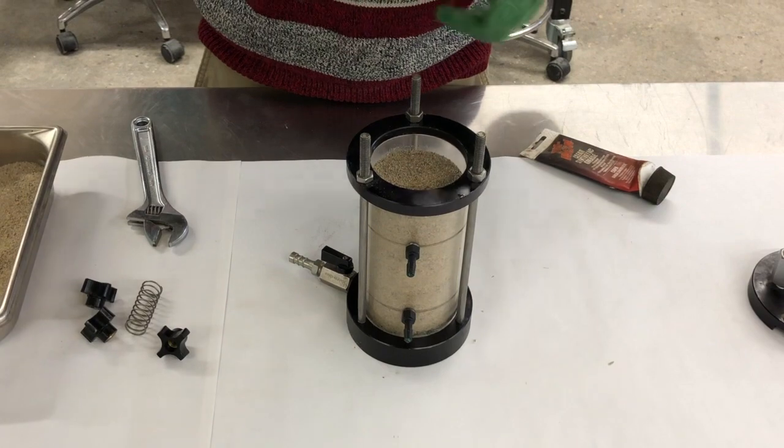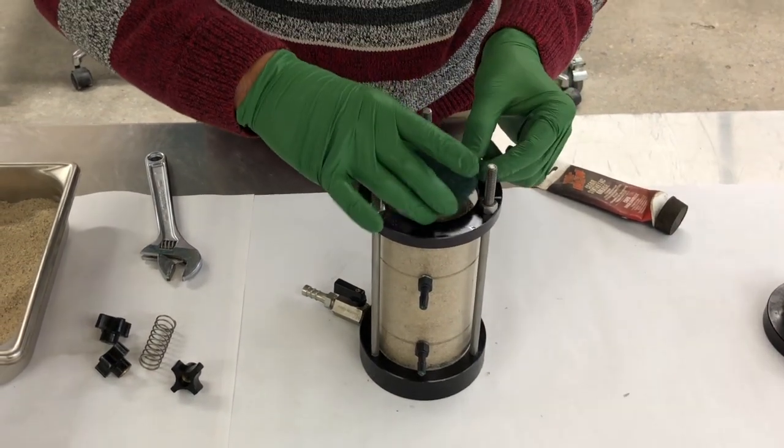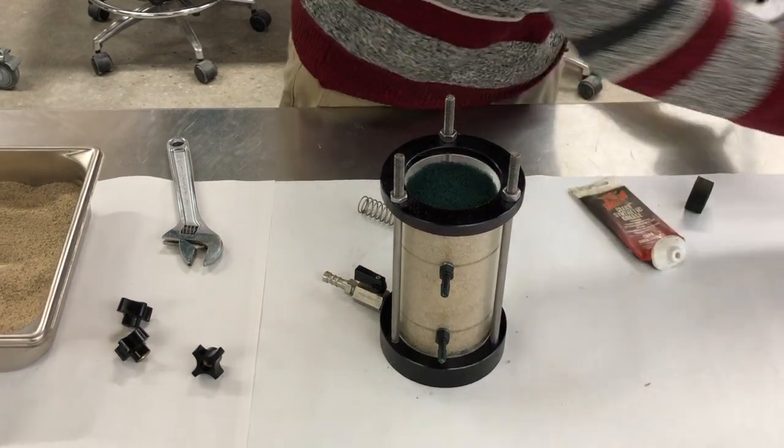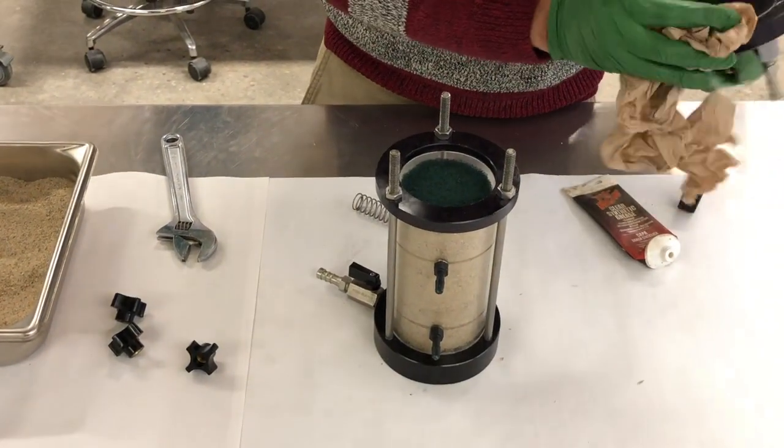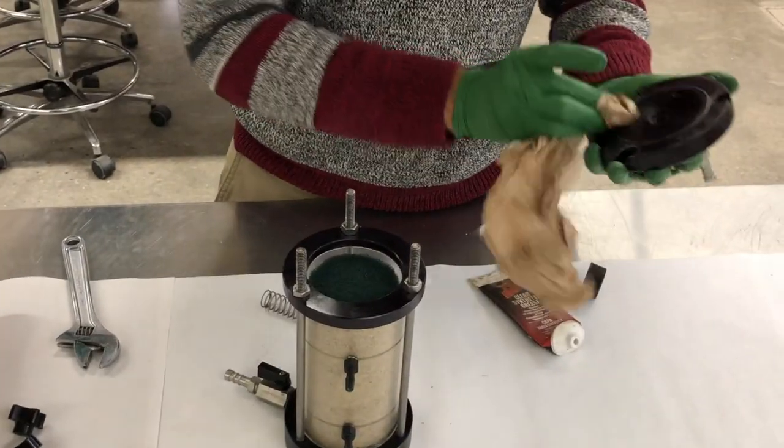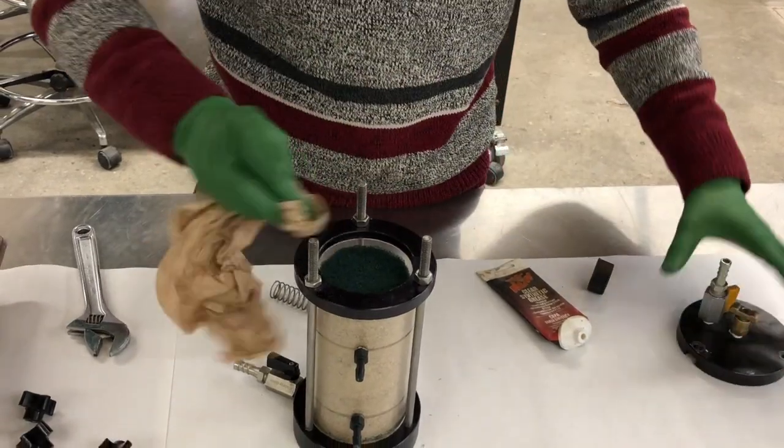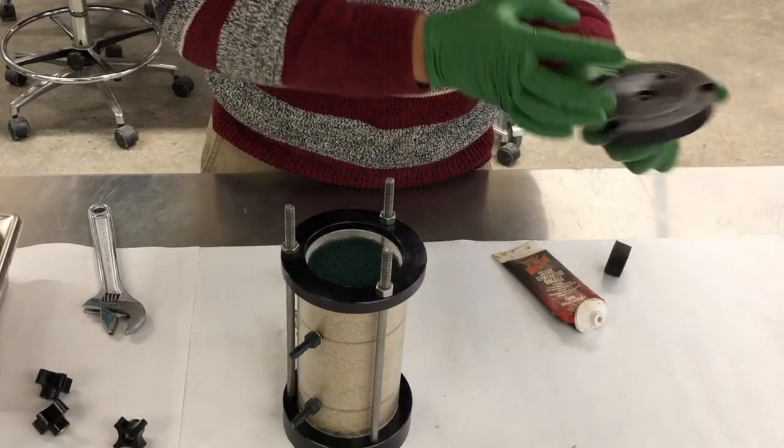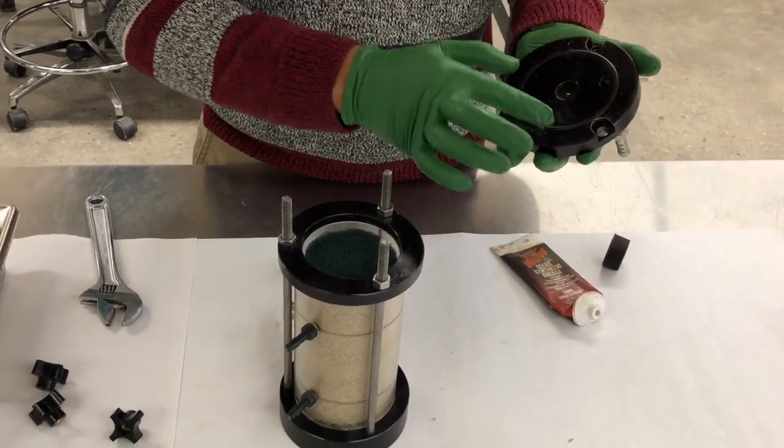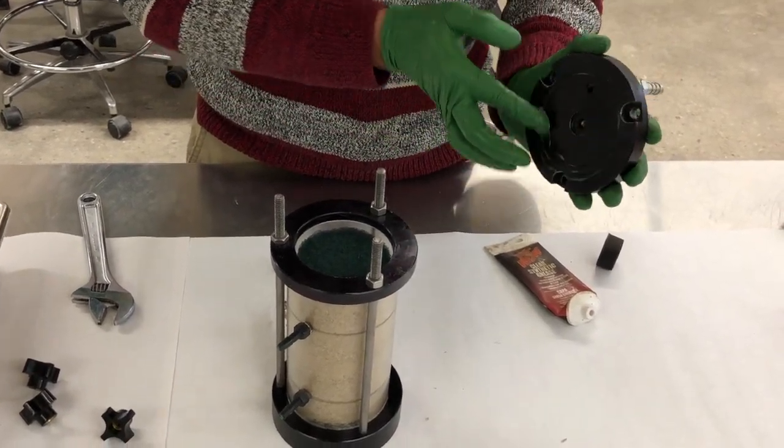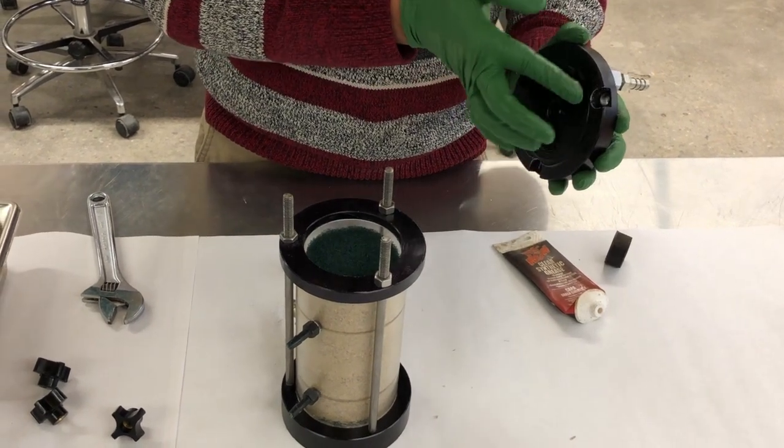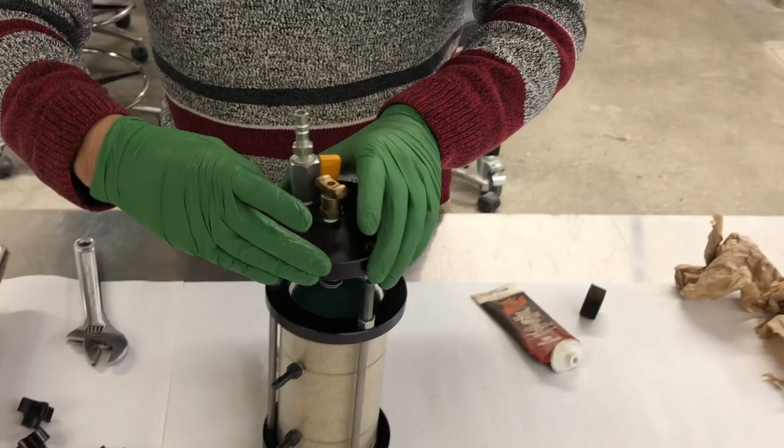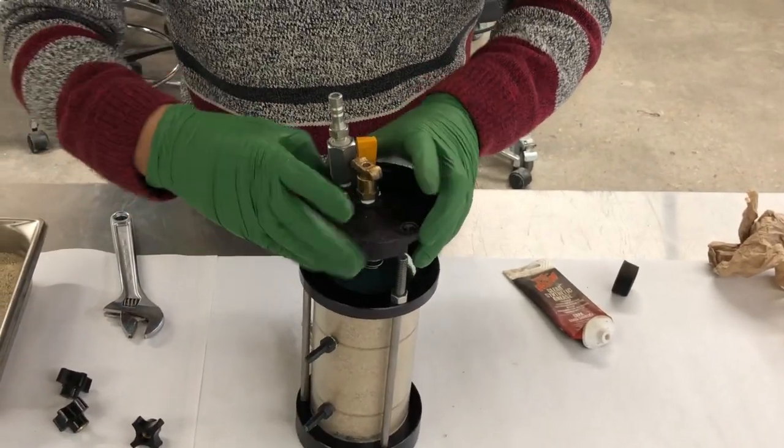Place the porous material on top of the soil sample. Apply grease on the perimeter of the cap. Place the spring on the top cap and finish assembling the permeability cell.